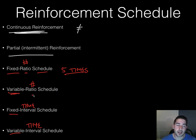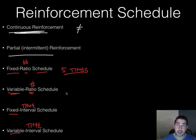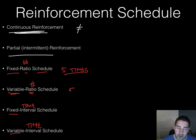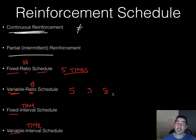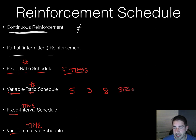Variable ratio means the student doesn't know how many times it will take to get the reinforcer — it's almost random. It might be after five times one instance, three times another, eight times another. You never really know what you're going to get. By not knowing, this tends to be stronger because you're constantly doing the behavior hoping to receive that reinforcement.